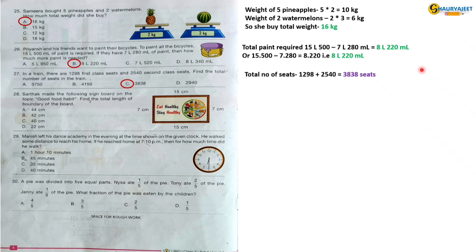Question 28: Sarthak made the following sign board on the topic Good Food Habit. Find the total length of boundary of the board. Total boundary of the board is equal to 44 cm. So the correct option is option A, 44 cm.